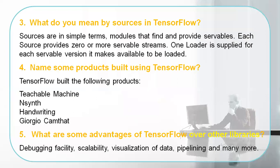What do you mean by sources in TensorFlow? Sources are modules that find and provide servables. A saved model bundle is one of the most prominently used servables. Each source is able to provide anywhere between zero to n number of servable streams, and one loader — which is supplied for each servable version — makes it available to be loaded. That's how you understand sources in TensorFlow.